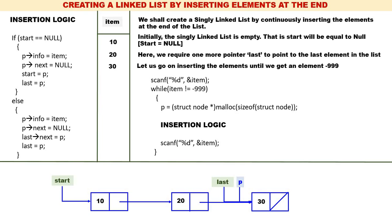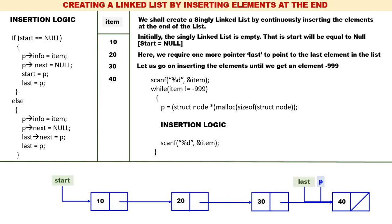Read the next item: 40. It is not equal to minus 99, so create a new node pointed by p. Start is not equal to null, so else part: p->info is equal to 40, p->next is equal to null, last->next is equal to p. Now 40 is the last node, so last is equal to p. Read the next item: minus 99. Since item equals minus 99, we exit the while loop. The single linked list is created by continuously inserting elements at the end, and start contains the address of the linked list.